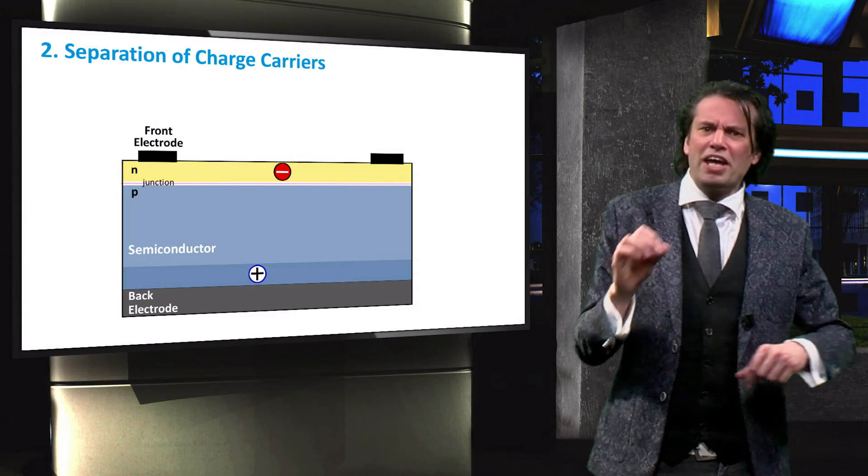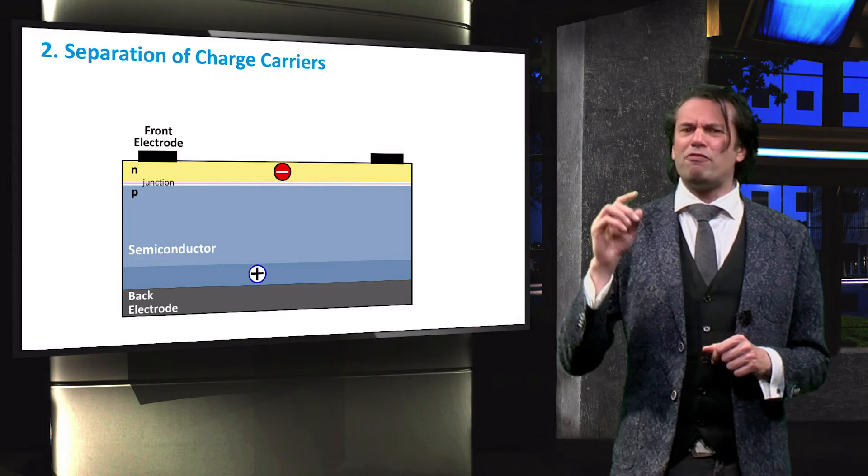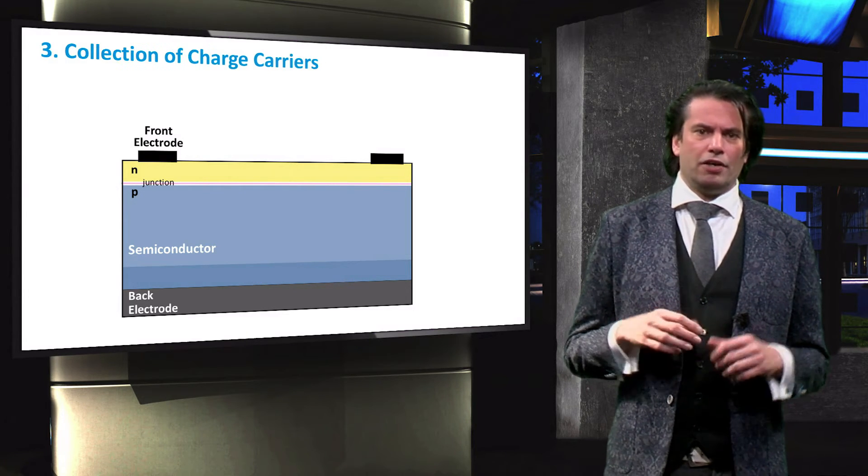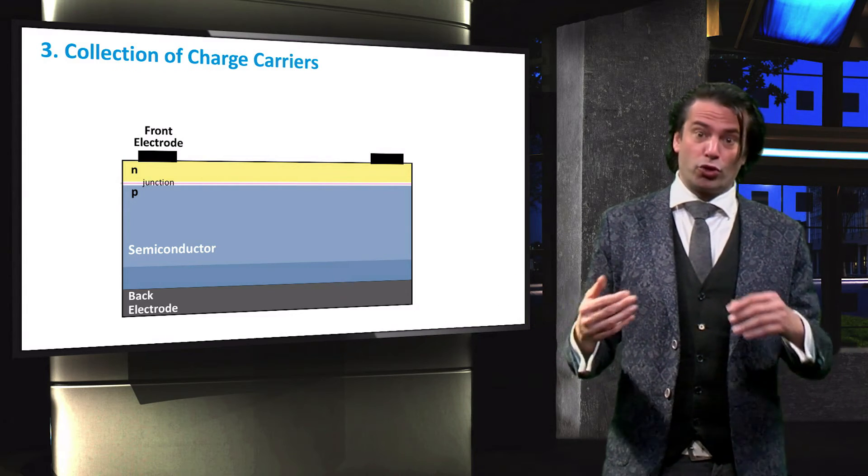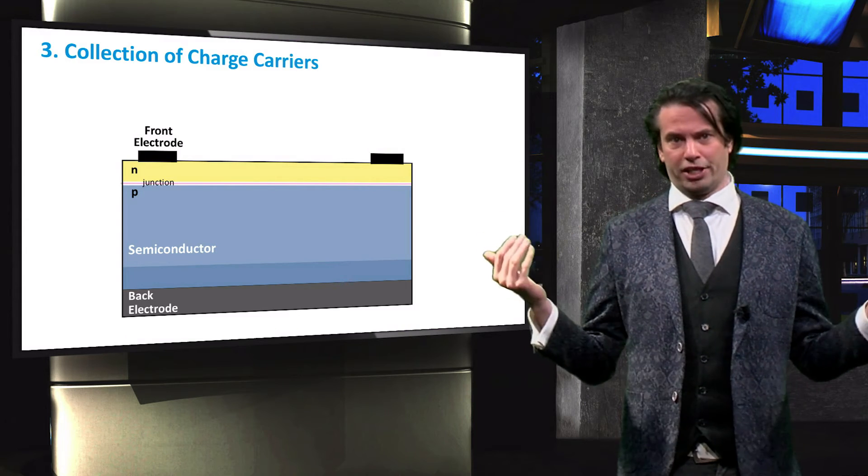So now we have generated and separated charge carriers. But we have one more step to generate electricity. The final process then involves the collection of the photo-generated charge carriers. Let's start over again.